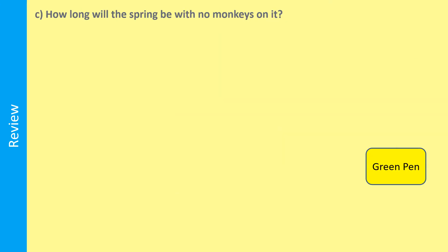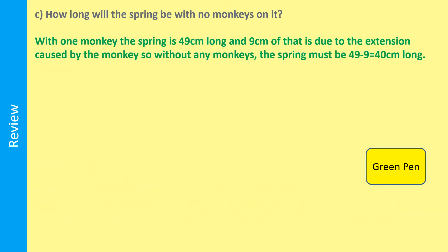Part C: how long will the spring be with no monkeys on it? As we worked out in Part A, with one monkey the spring is 49 centimetres long and 9 centimetres of that is due to the extension caused by the monkey. So without any monkeys, the spring must be 40 centimetres long.